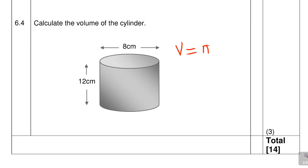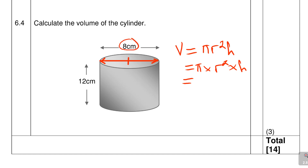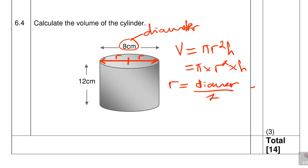We can write it as V = π × r² × h. The diameter given is 8, so radius = diameter ÷ 2 = 8 ÷ 2 = 4 cm. So r = 4 centimeters. The height h = 12. Now we can substitute: V = π × 4² × 12.